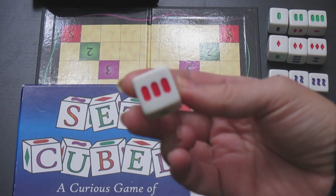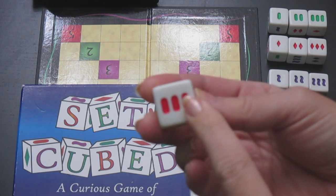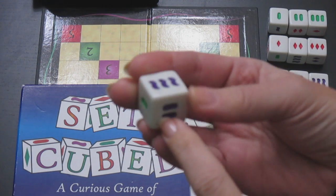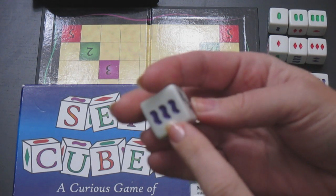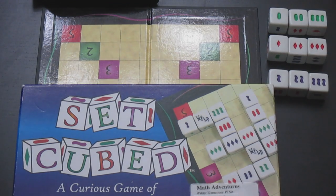A set occurs when you have all colors, all the same shapes, or different one, two, and three. For example, if we look at this, you can see in this example that this makes a set. It's a red oval three, two purple squigglies, and one green diamond. That makes a set because all three of them are different colors, all three of them are different symbols, and all three of them are different numbers.